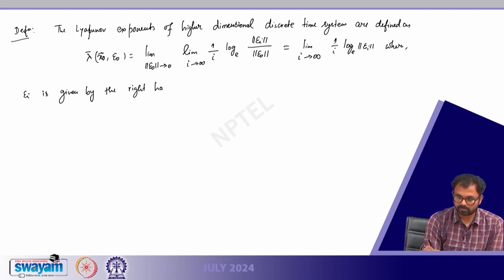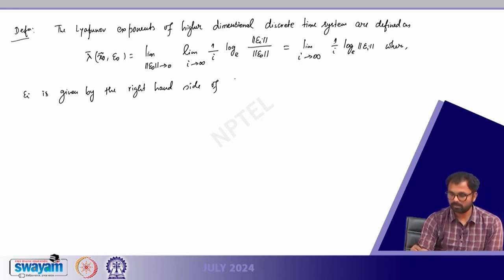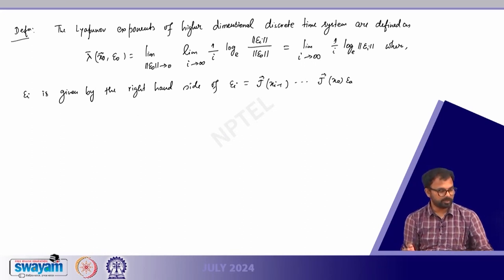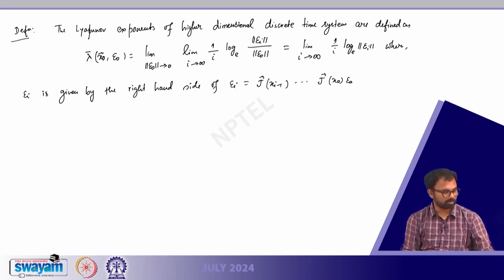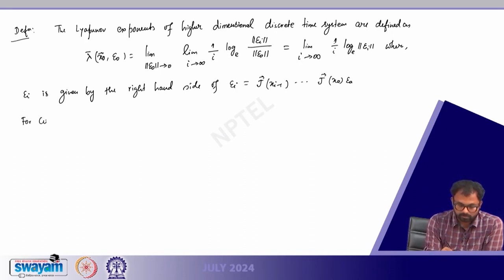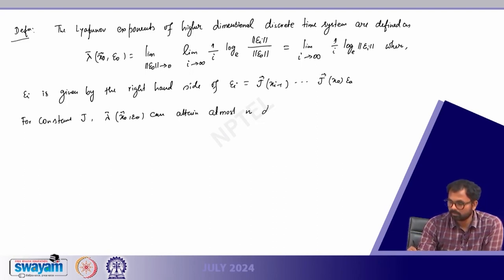If the source is an extended source, the fringe pattern will be concentric circles. That is the equivalent optics picture for the Michelson interferometer, which I have described in the last class and in this class.